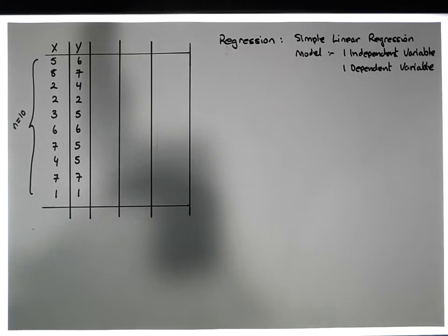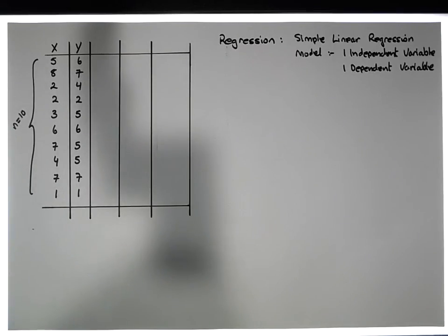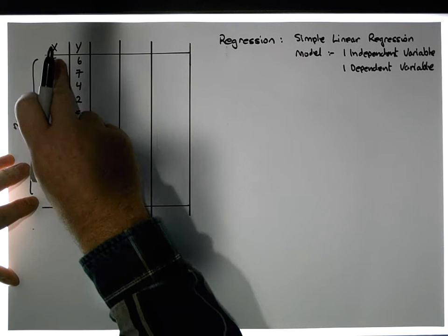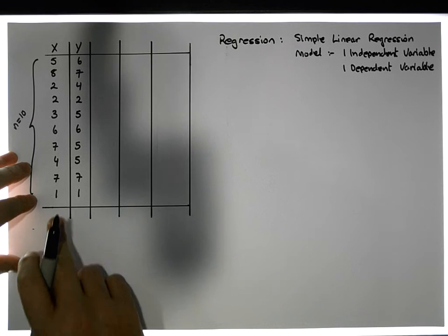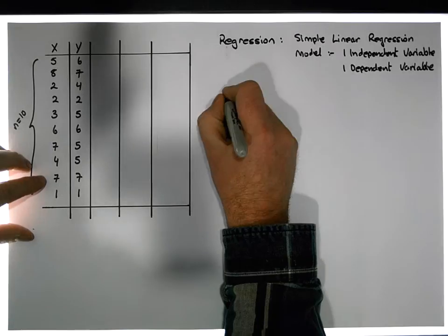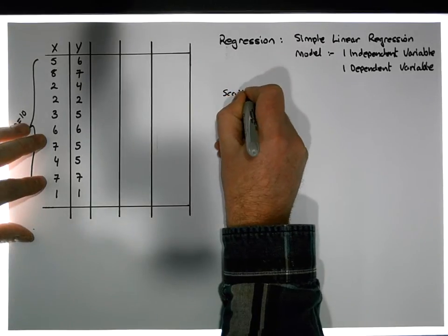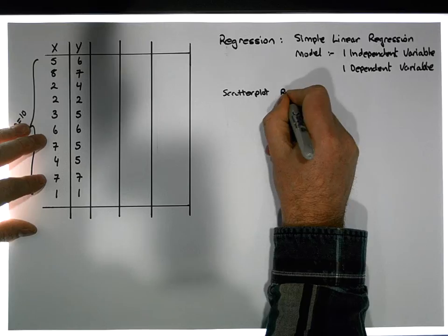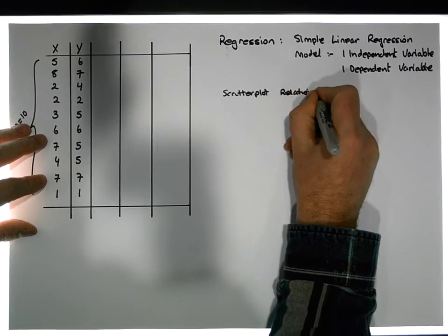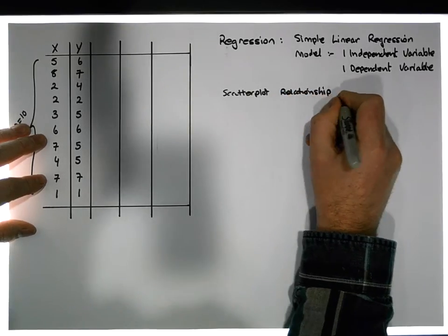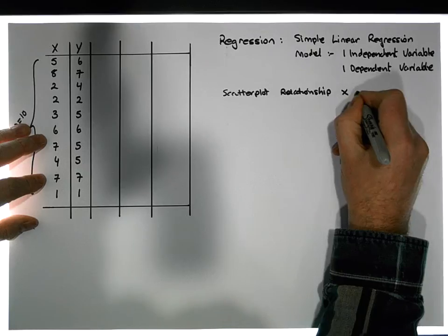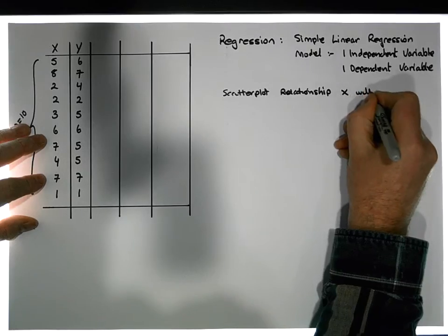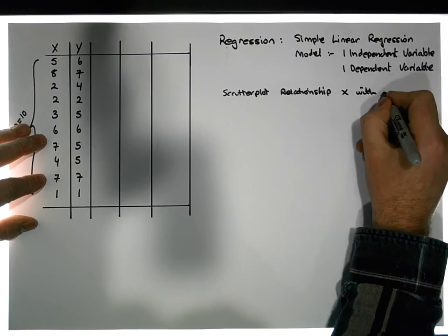Now we'd like to build a simple linear regression model. The best way to interpret what's going on is to do a scatter plot — a scatter plot of the relationship between x and y.